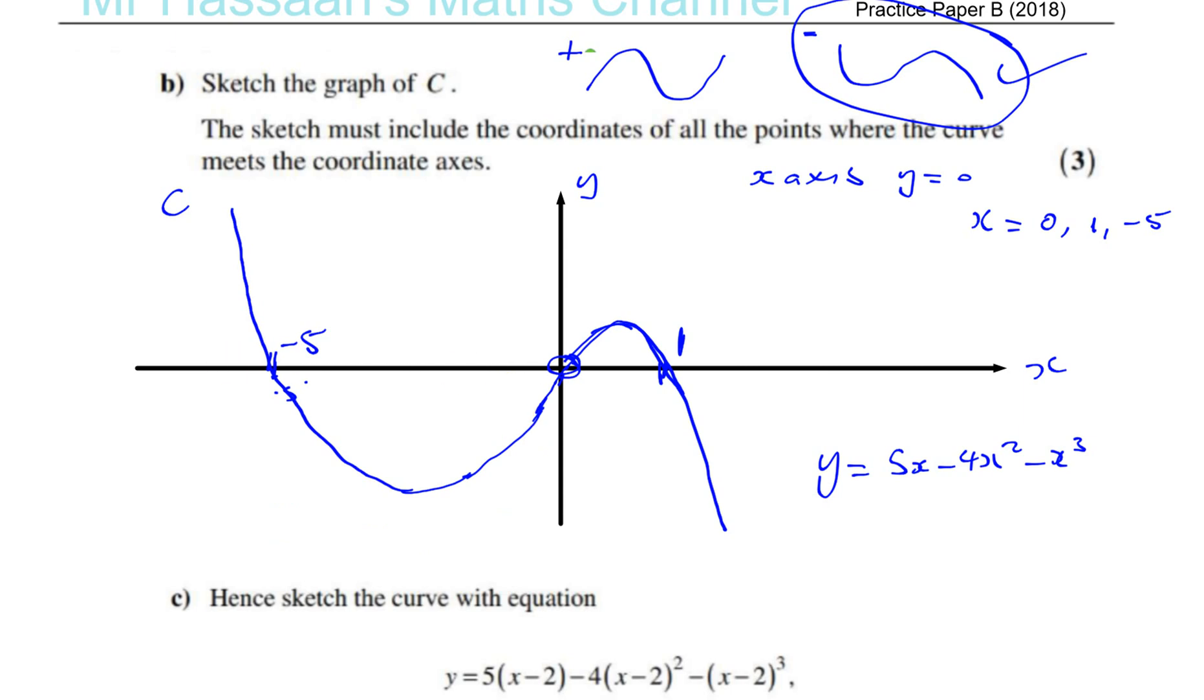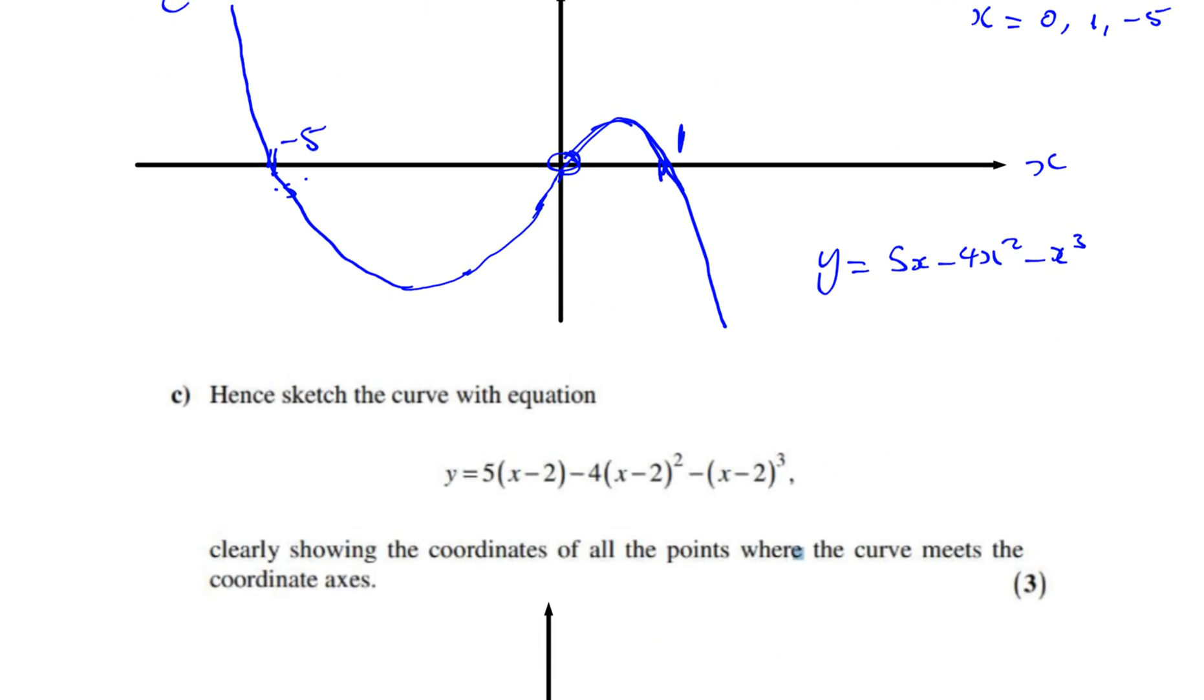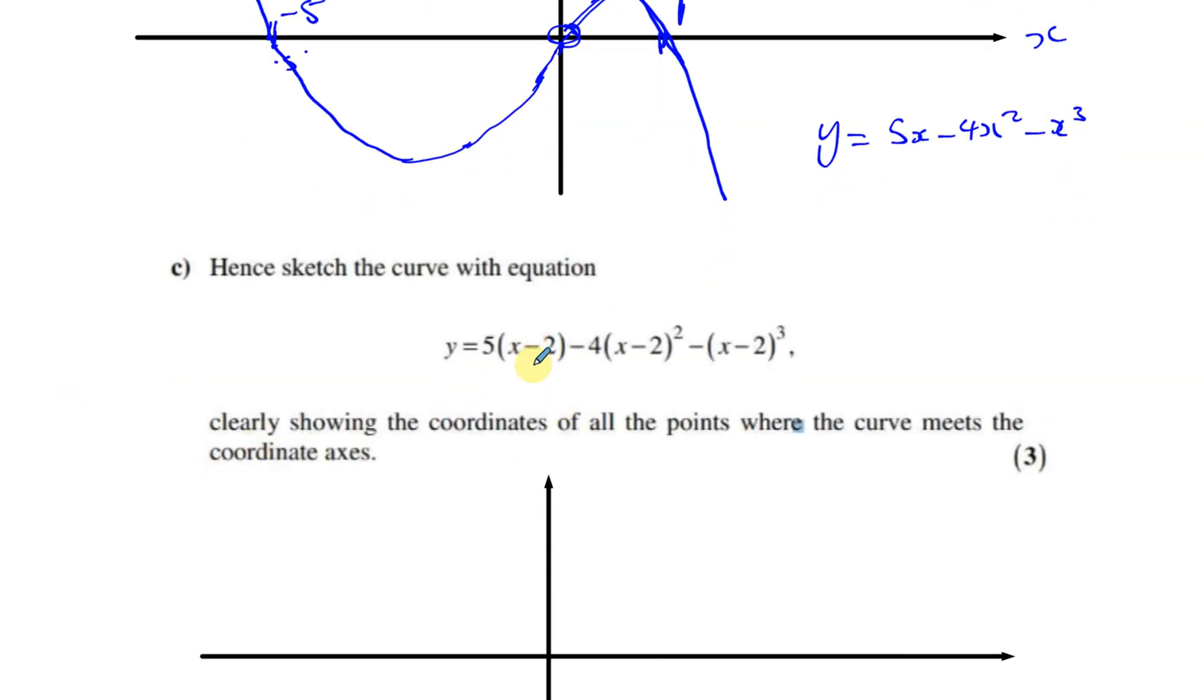Now part C says, Hence sketch the curve with the equation Y equals 5 times X minus 2 minus 4 times X minus 2 squared minus X minus 2 cubed. Now the key here is the word hence. It doesn't say hence or otherwise. So some people were actually trying to expand this and form an equation. They were expanding this X minus 2 cubed and expanding this and expanding that and finding a cubic curve. Then factorizing and finding where it crosses the X axis. I mean three marks is too little for all of that. So there's obviously some relation between this question and the previous question. That's why it says hence.